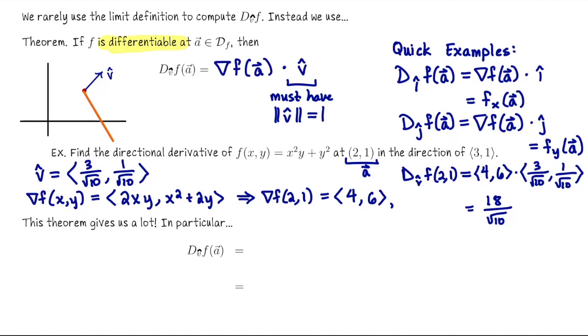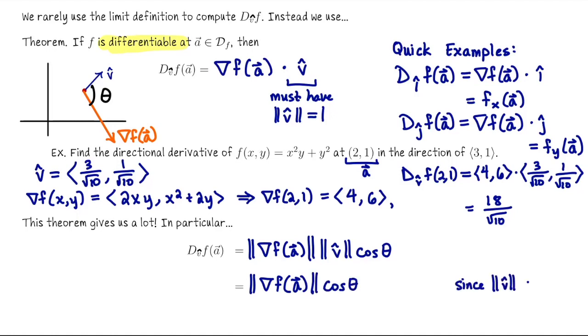In particular, if I come back to my picture and imagine that at the point I've highlighted the gradient vector looks like this, so that the smaller of the two angles opened between v and the gradient is called θ, then this directional derivative can be computed as the length of the gradient at a times the length of v times cosine of that angle θ. But something I wrote here is really unnecessary because v is a unit vector. So I can rewrite this as the length of the gradient times cosine of θ.